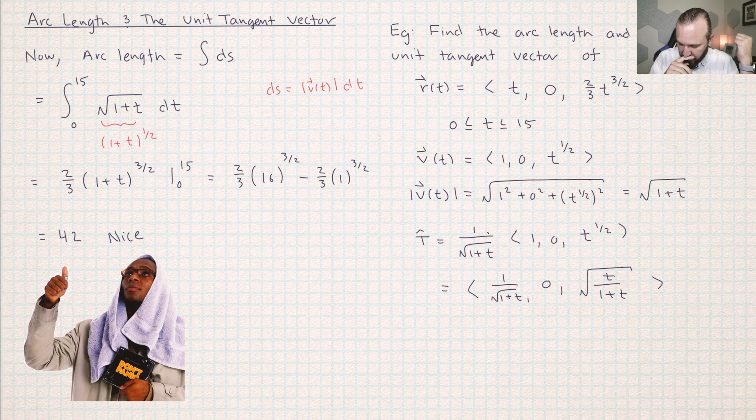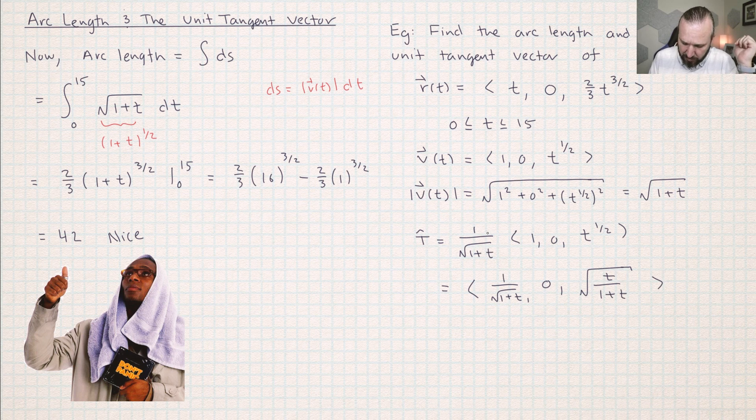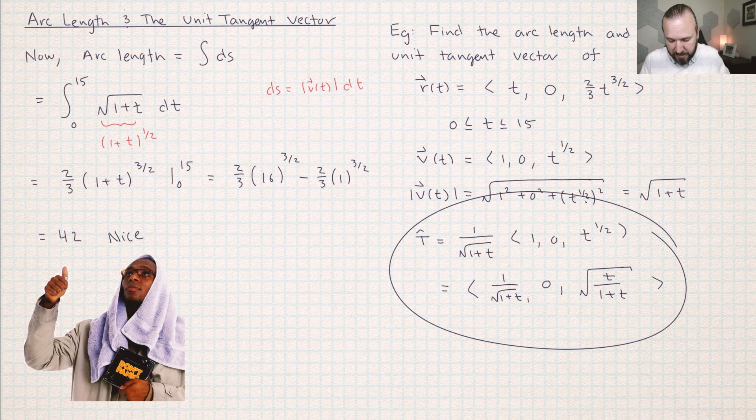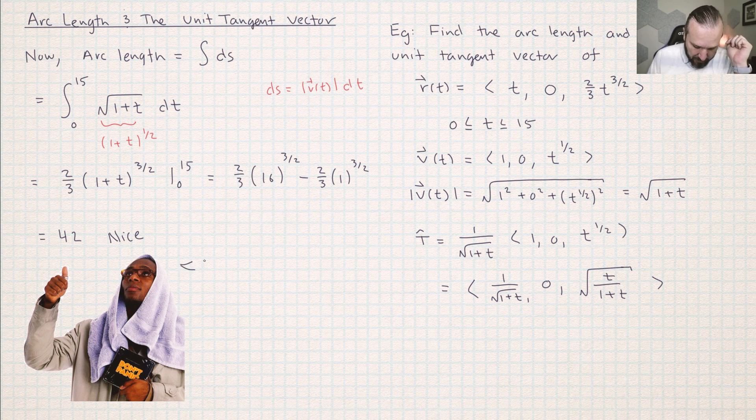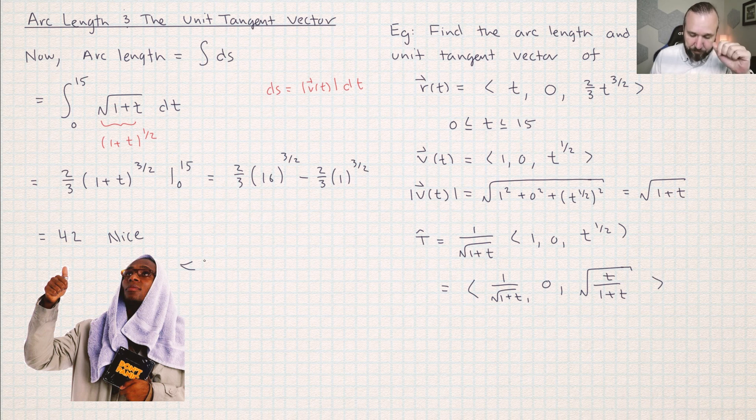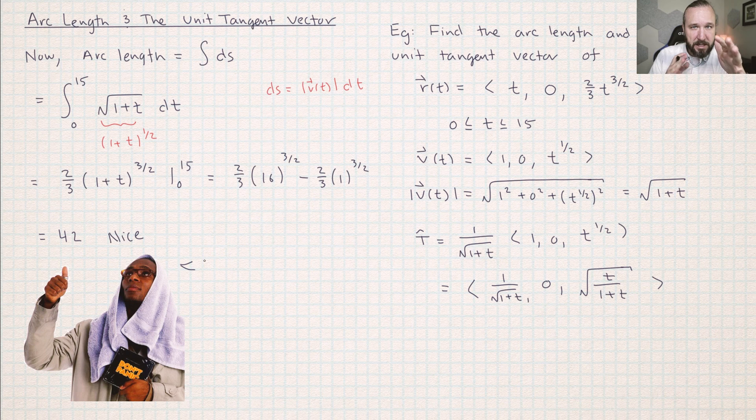Calculating arc length isn't so bad depending on really just how difficult the integral is to work out. And to find the unit tangent vector, what you need to do is to just take the velocity and rescale it down by the magnitude of the velocity. This kind of leaves us with a question though. If I have a path that I would like to take and I choose a parameterization for that path, is the arc length going to be different depending on which parameterization I chose?